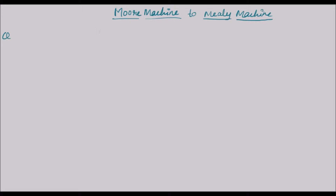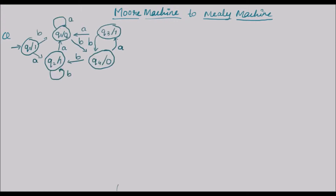Let's see that with an example. Here I have a question which looks like a state transition diagram, and let's make a state transition table from this and understand what's actually happening.